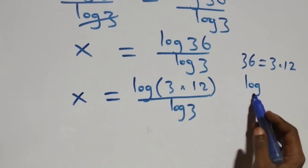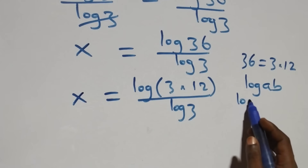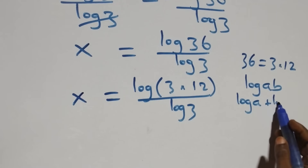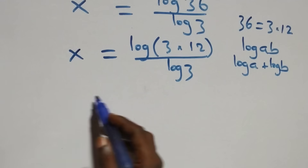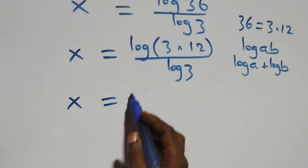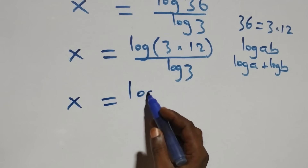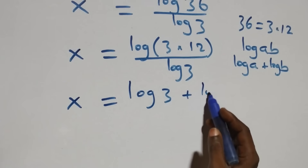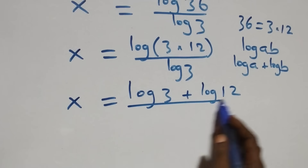When we have log(a times b), this is the same thing as log a plus log b. So we have x equals to log 3 plus log 12, all over log 3.